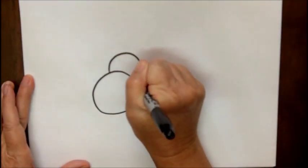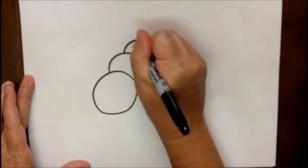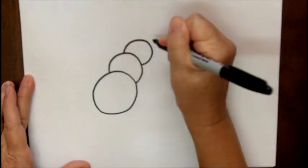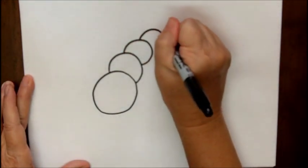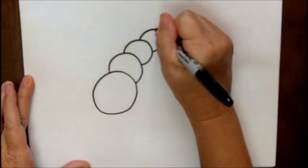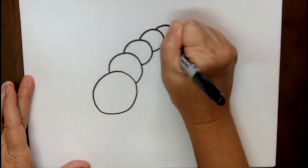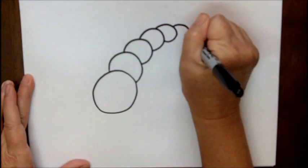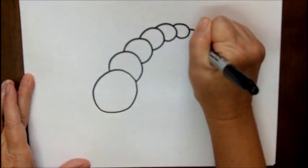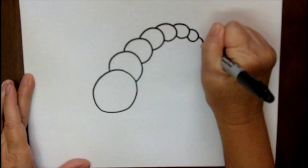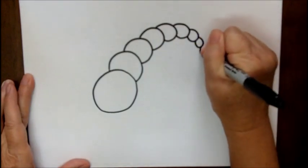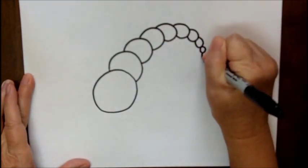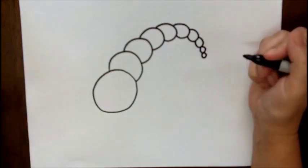You just basically attach more almost circles onto your first circle, and as you go the circles are getting smaller and smaller and smaller until they get to be very tiny and that will be your little tail. So this one's just curving around to make an arc.